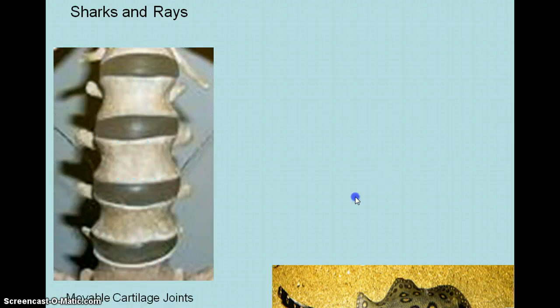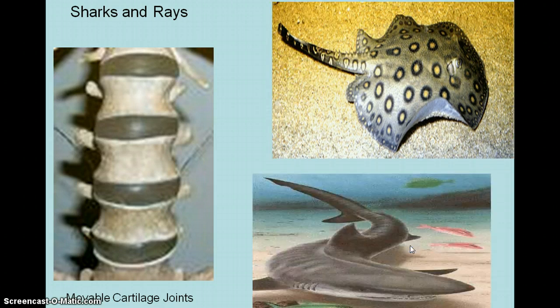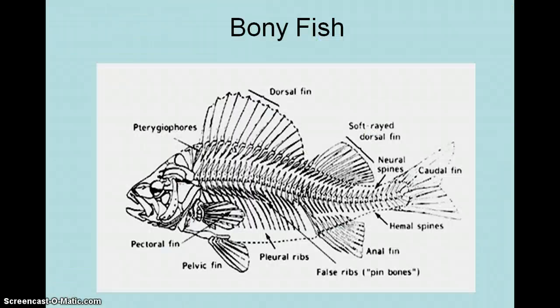Sharks and rays are my Chondrichthyes, and they have movable joints made up of cartilage. Bony fish are every other fish that I don't name. If I don't say lamprey, hagfish, shark, or ray, the answer is bony fish. End of story.